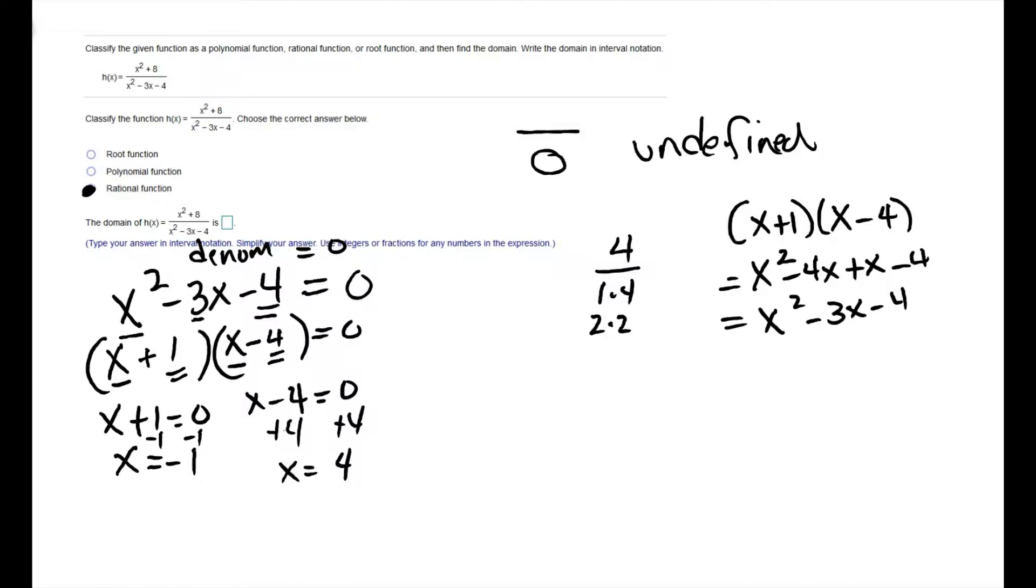So these two values are going to cause the denominator to equal zero, so they have to be excluded from the domain. So what I'm doing is I'm going to start off with assuming that the domain is all real numbers, or negative infinity to infinity, but I figured out these values that I need to exclude. So I'm going to exclude negative 1 and I'm going to exclude 4.